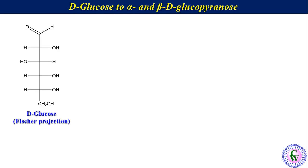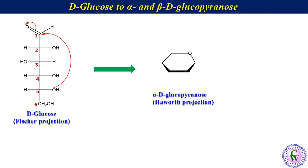Now let's take the example of conversion of Fischer projection formula of D-glucose into alpha and beta D-glucopyranose Haworth formula. The Fischer projection formula of D-glucose can be drawn like this. For better understanding, let's label the carbons as 1, 2, 3, 4, 5 and 6. For conversion to the pyranose form, C5-OH attacks C1 to make a hemiacetal. This cyclization gives the 6-membered cyclic skeleton of the Haworth projection, in which carbons 1 to 5 are in the ring and the 6th carbon is not part of the ring.